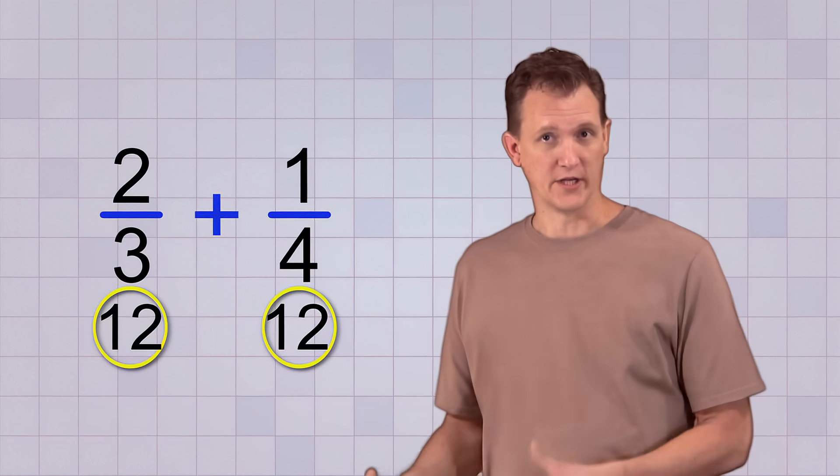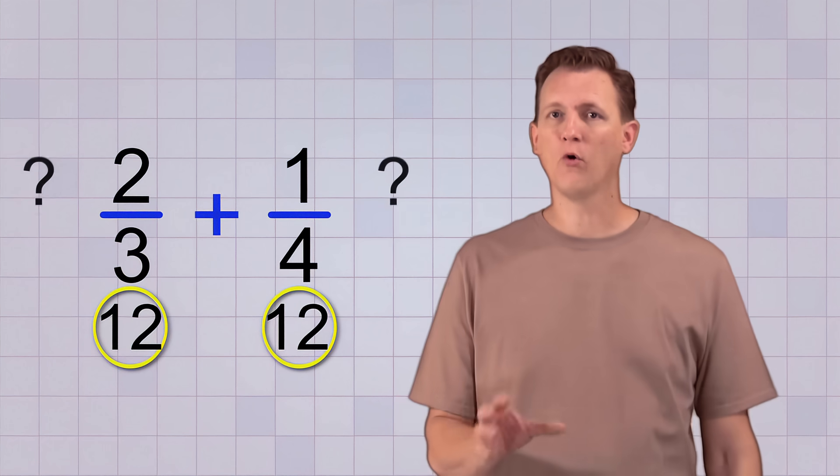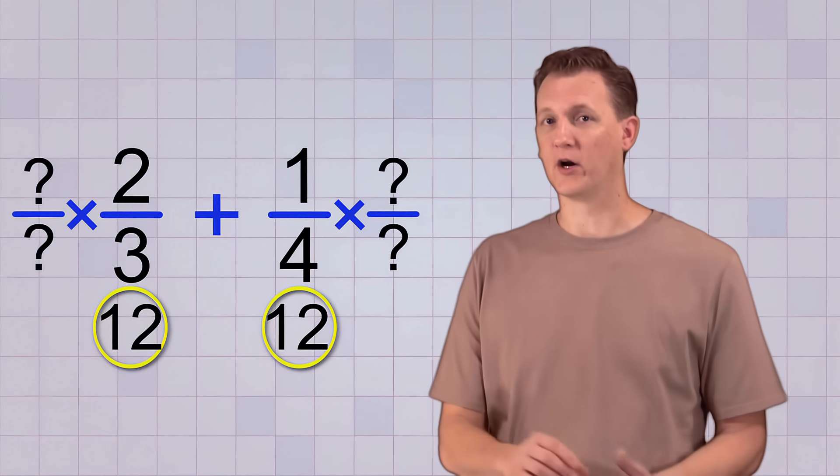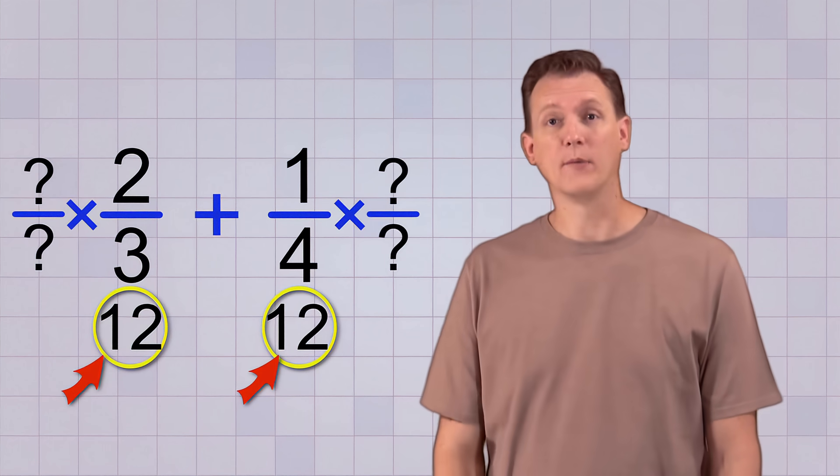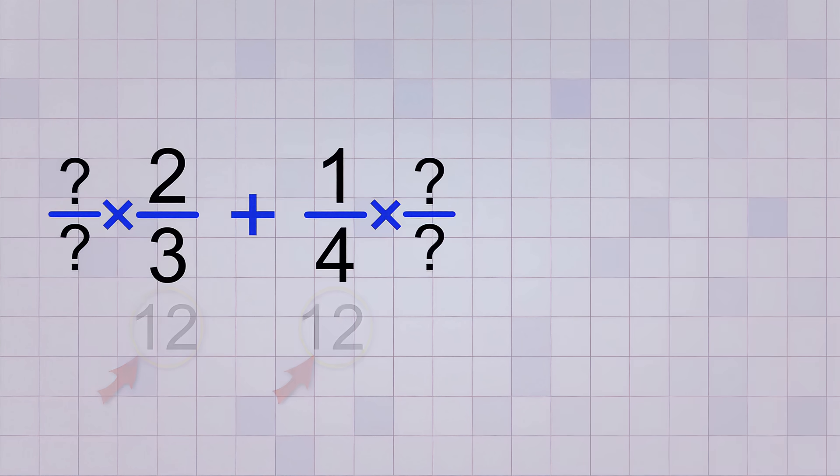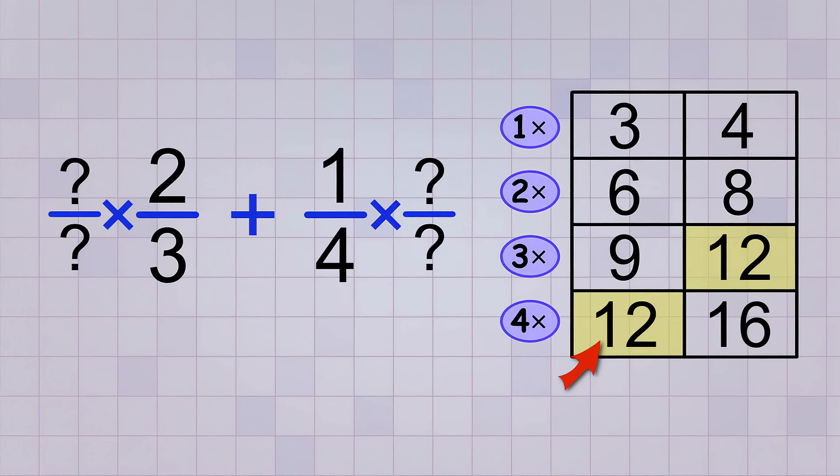Once we know what the least common denominator is, we have to figure out which whole fractions we'll need to multiply our unlike fractions by to get equivalent fractions with that common denominator. The solution is to use the same numbers that resulted in the common multiple.